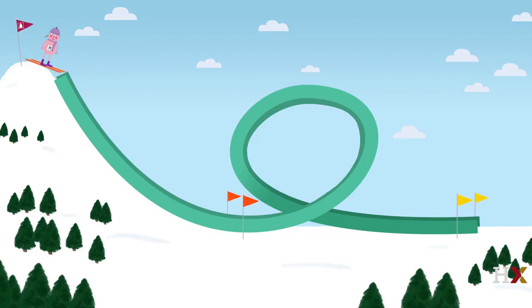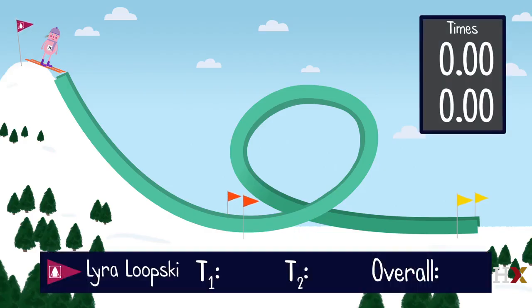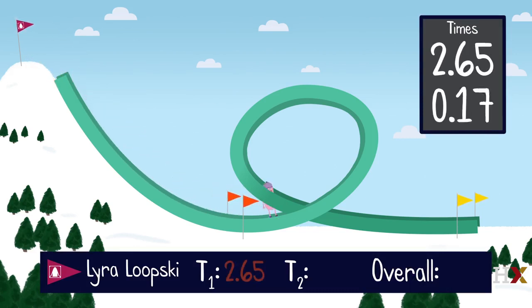Here she goes! It's always amazing to watch Lyra Loopski's ski loop. In ski looping, the competitor skis down a mountain and then 360 degrees through a loop and then straight through to the finish line.